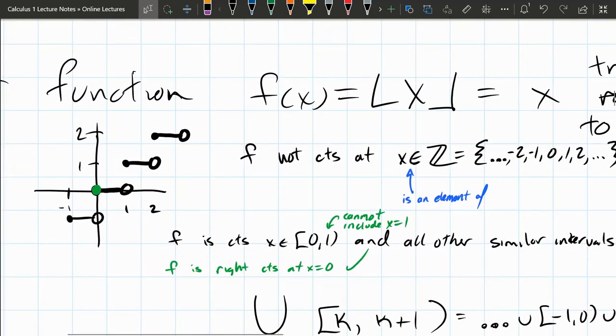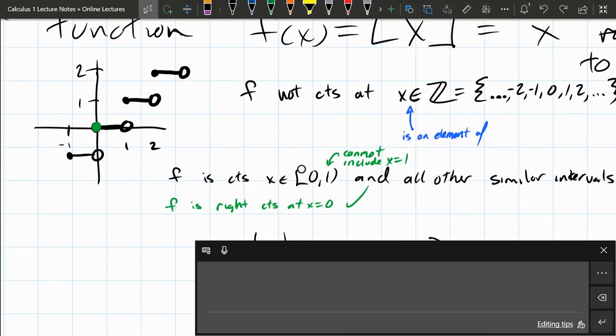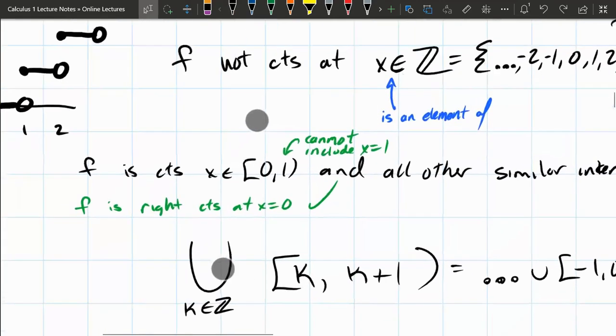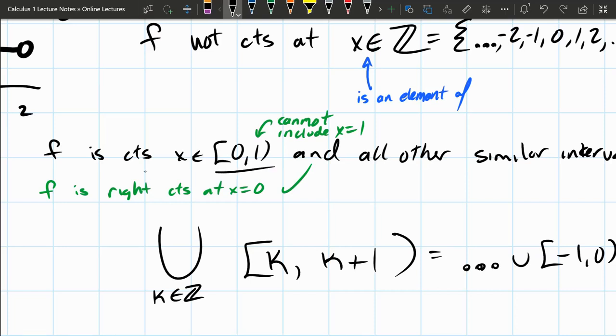Where is this function continuous? It's continuous on all of these small intervals here. So how do we write that? It is continuous, specifically on the interval 0 to 1. And you could also move this over 1 to 2. But remember, it's got to be closed on the left, open on the right.